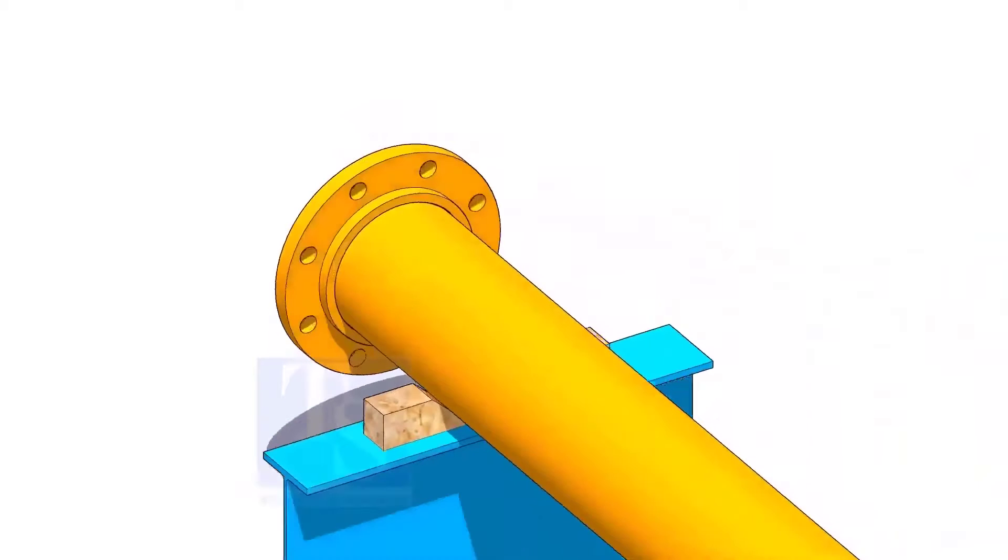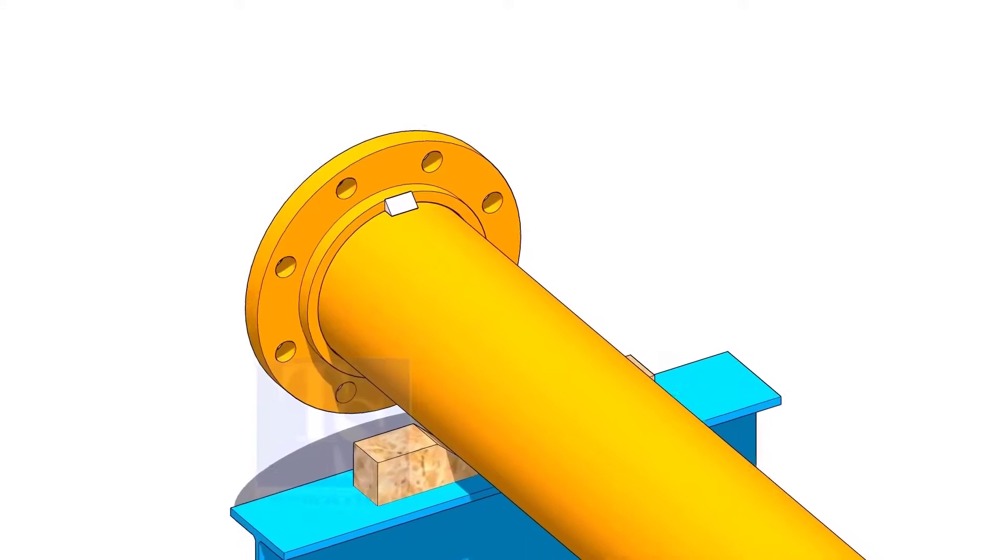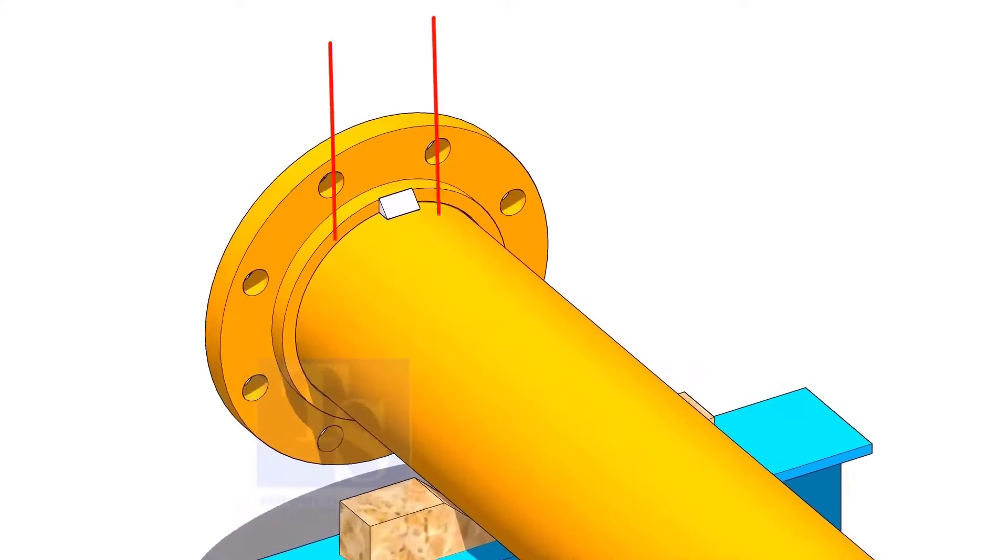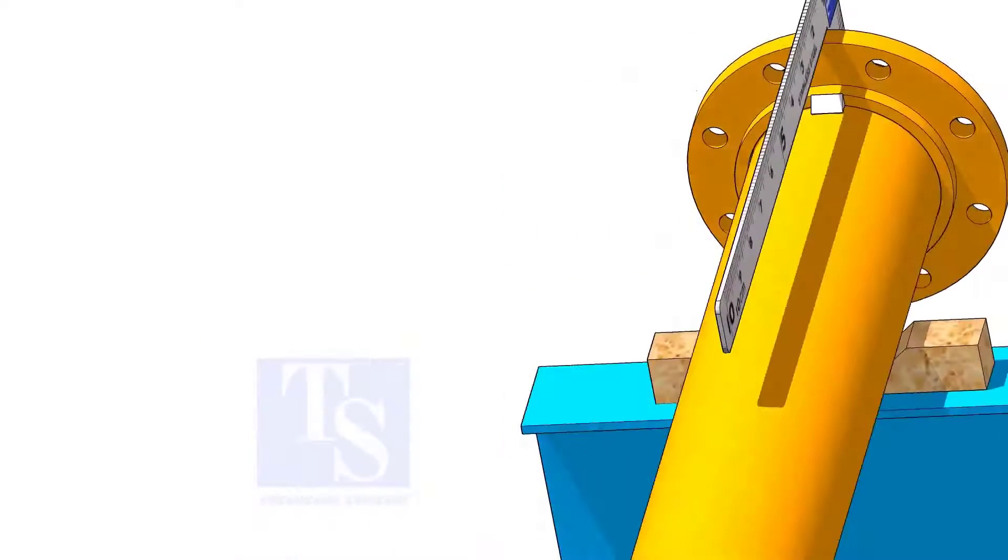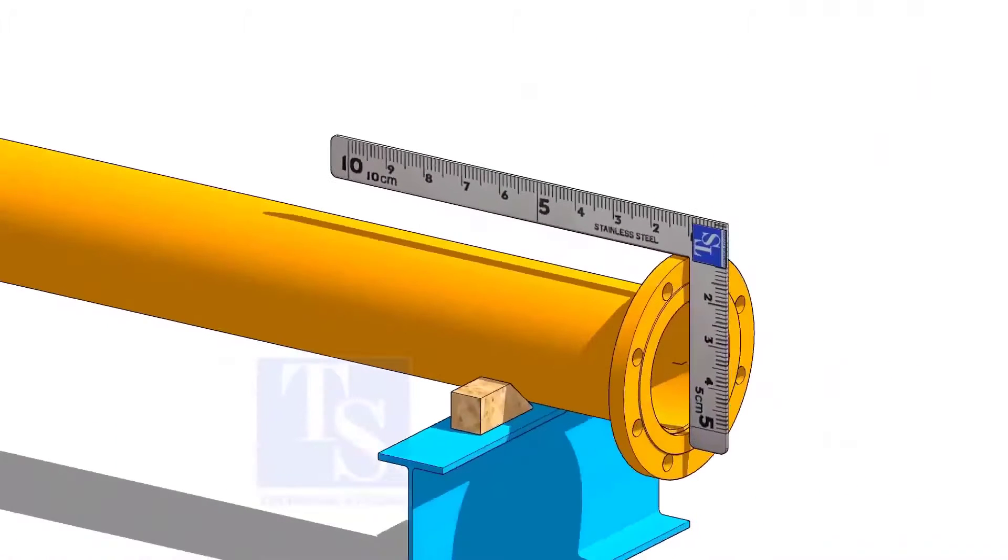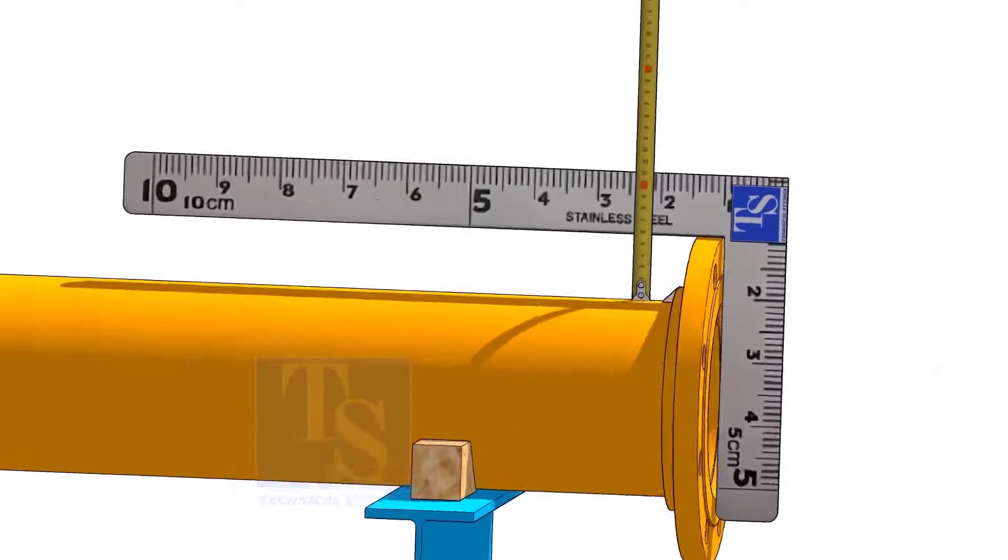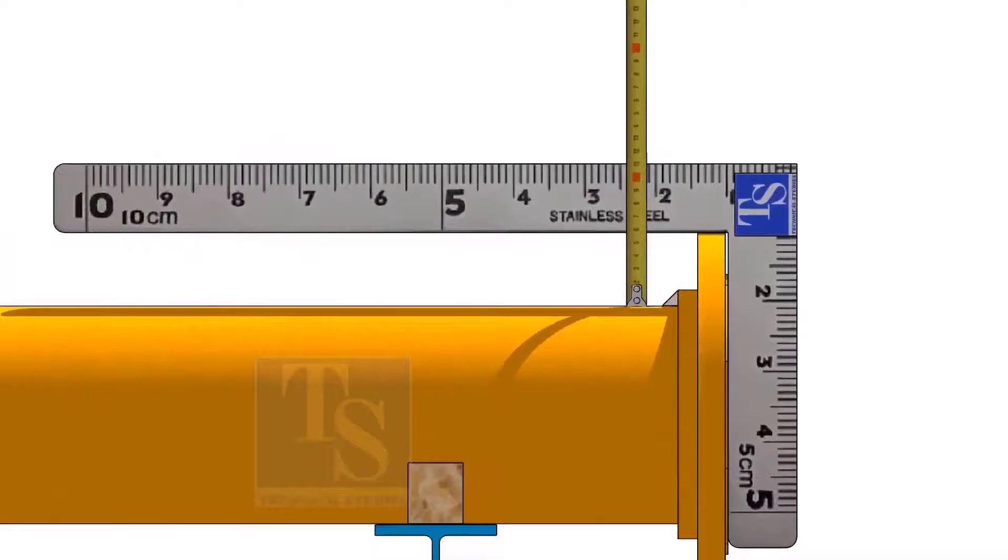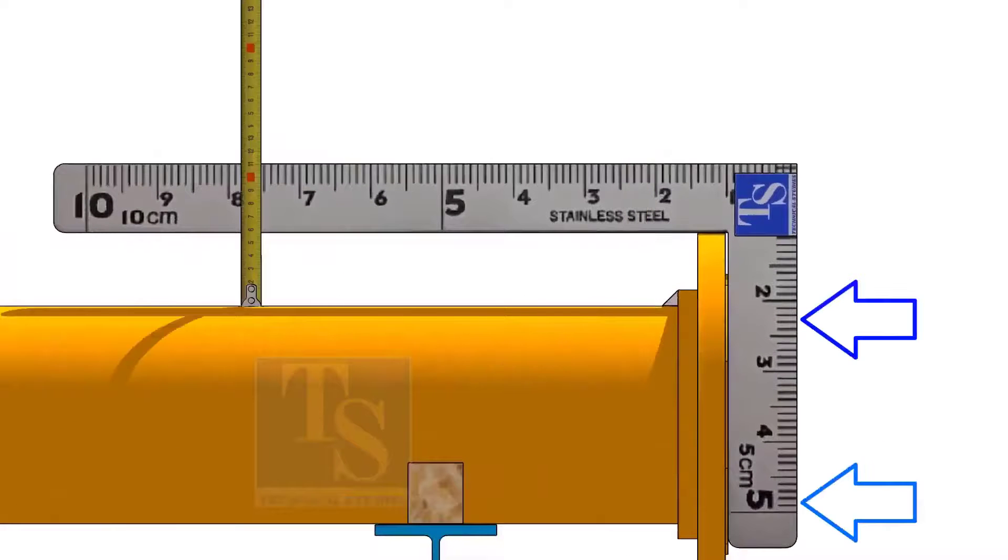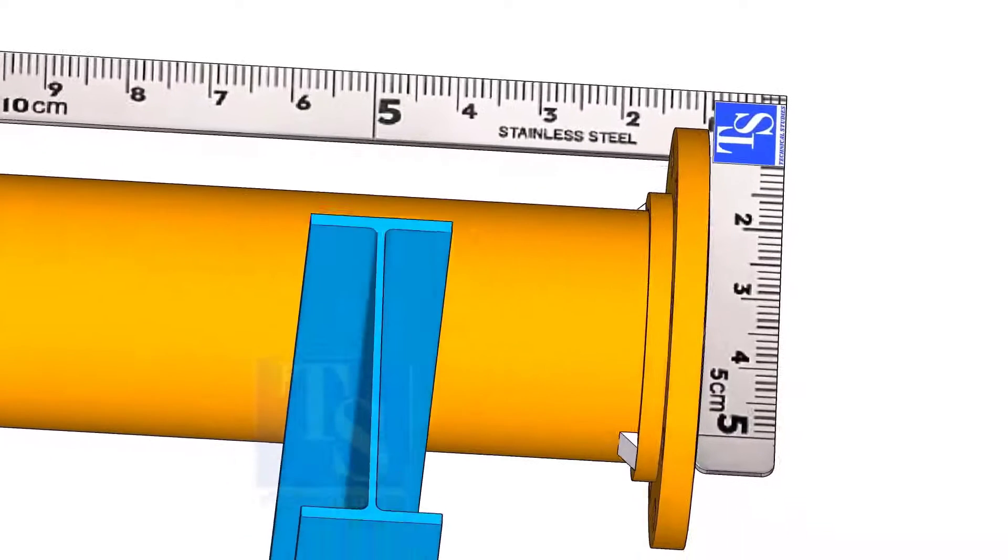Tack weld on the top side. The tack weld shall be between two holes on the flange. Hold a right angle on the face of the flange and check the distance as shown. Adjust the face level of the flange to make the distance equal. Tack weld at the bottom side.